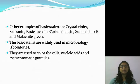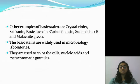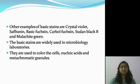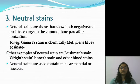Other examples of basic stains we saw include crystal violet, safranine, basic fuchsin, carbol fuchsin, Sudan black B, and malachite green. These are widely used in microbiology. The reason we discussed is that the surface of the cell is negatively charged, so whenever we want to stain the cell surface, we must use a basic stain because it carries the opposite, positive charge. Apart from this, nucleic acids and metachromatic granules are also colored using basic stains.